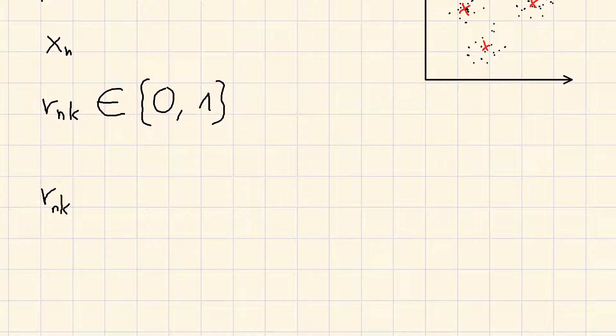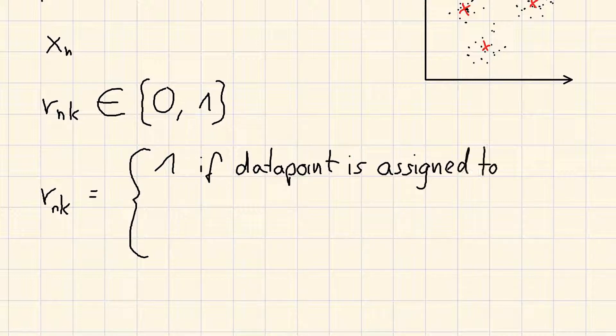If data point xn is assigned to cluster k, then rnk equals 1, and if xn is not assigned to cluster k, then rnk equals 0.